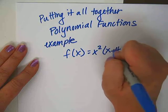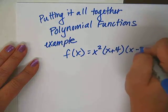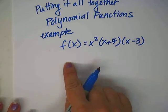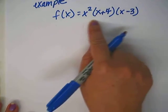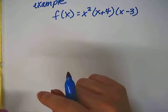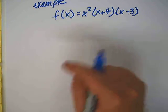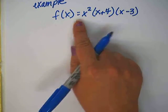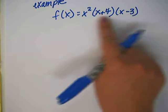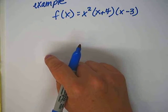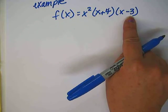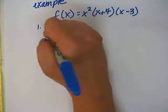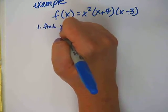f(x) equals x squared times (x plus 4) times (x minus 3). This particular function is given in factored form. Some problems won't be factored and you'll have to begin by factoring — for example, finding a greatest common factor first, then unfoiling the remaining stuff. This one comes already factored.